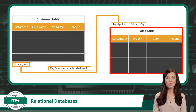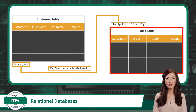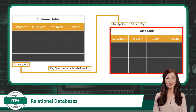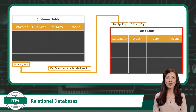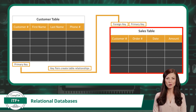Now let's talk about the sales table. Here, we record details about each sale, like who made the purchase, the order number, date of purchase, and the amount. This table helps us track all our sales transactions.